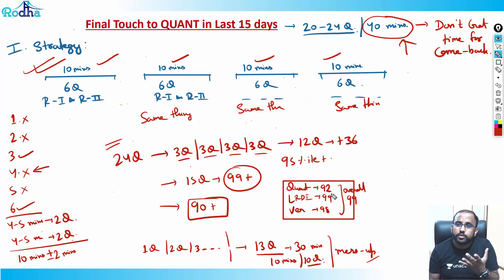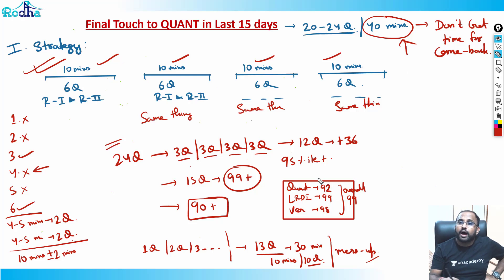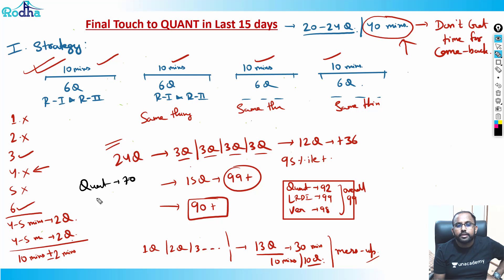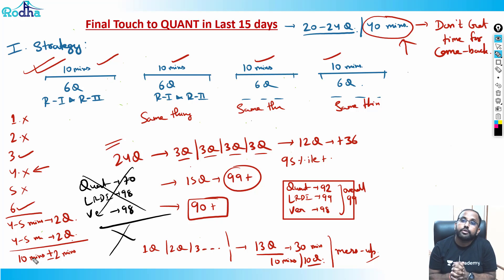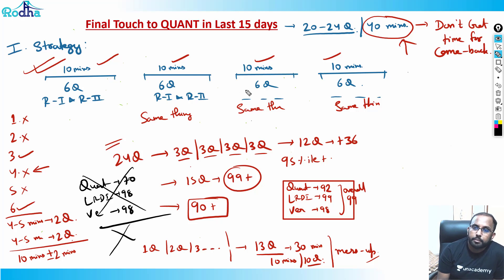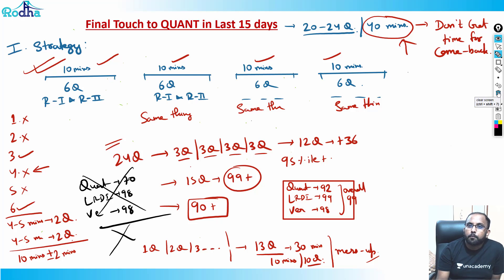But the moment one paper collapses — say 70 in quant, 98 in LRDI, 98 in verbal — you get no calls. That's not a situation you want. So always try to secure 90 to 95-plus percentile in every section. That's the best thing you can do. This is the strategy you should follow.